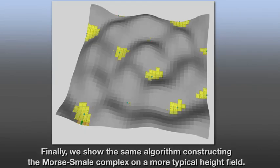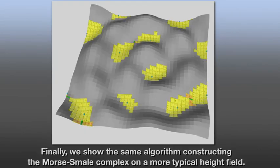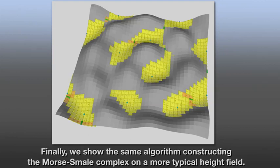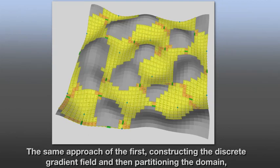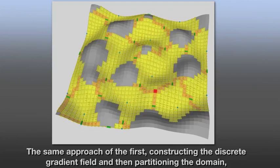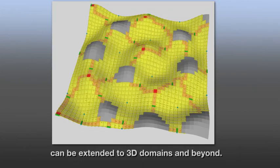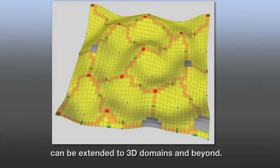Finally, we show the same algorithm constructing the Morse-Smale complex into a more typical height field. The same approach of the first, constructing the discrete gradient field and then partitioning the domain, can be extended to 3D domains and beyond.